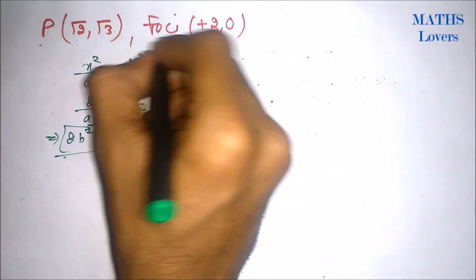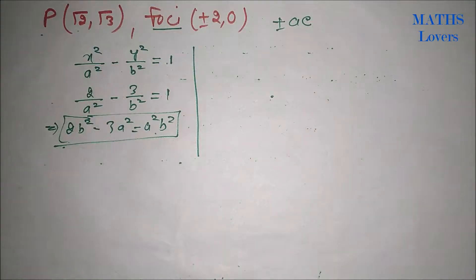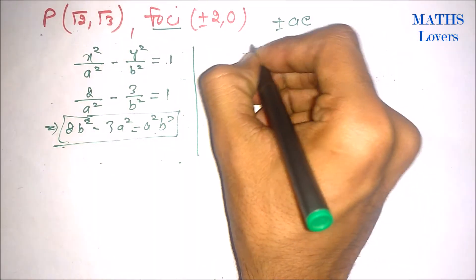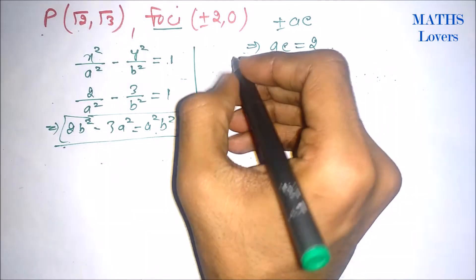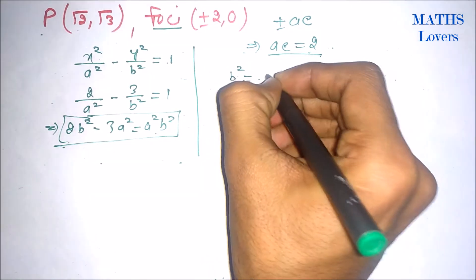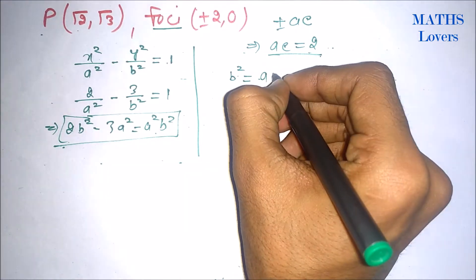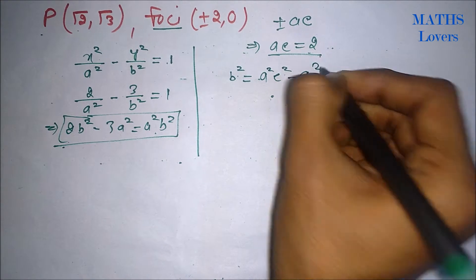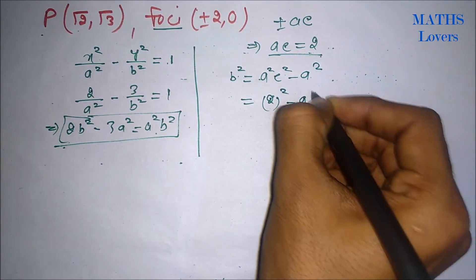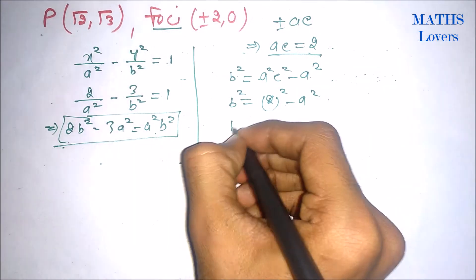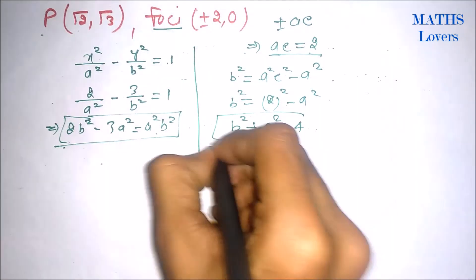Now, let's solve for foci. We know that foci is always at ae, so we can write ae = 2. If you remember the eccentricity relationship for hyperbola, that is b² = a²e² - a². Since ae = 2, it will be 4 - a². So b² + a² will be equal to 4. This is our second relationship.